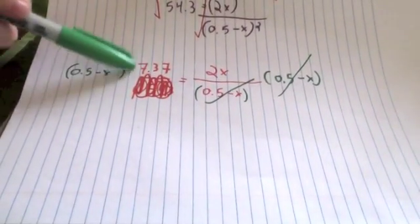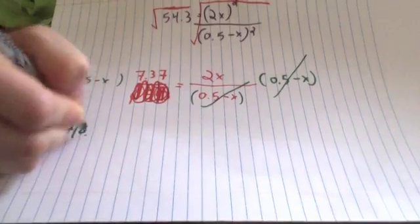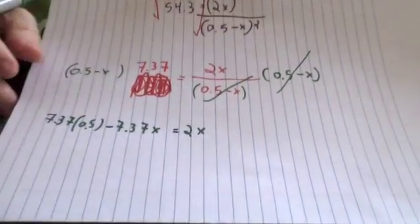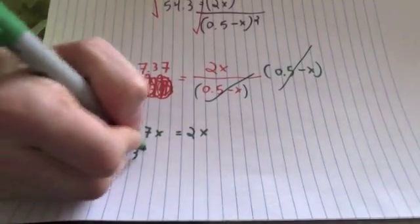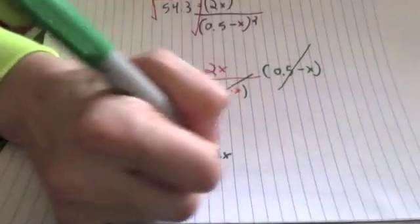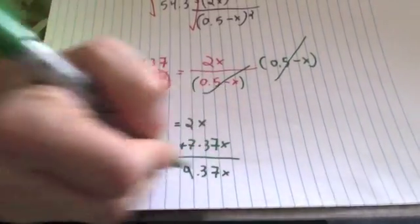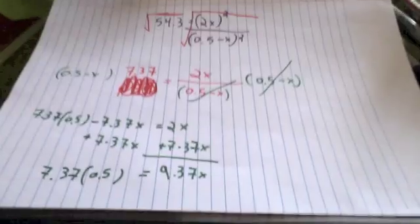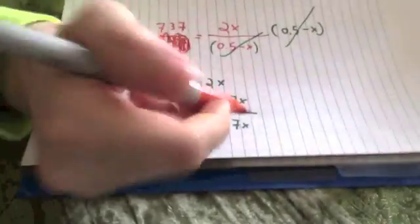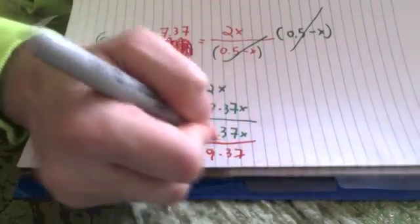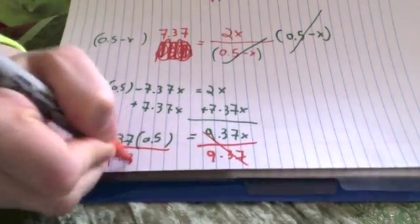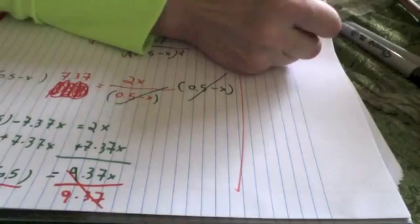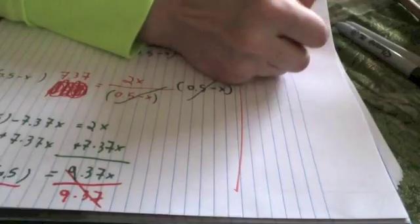So what I wind up with here is 7.37, and again I don't have a calculator, so I'm just going to write it out. 7.37 times 0.5, and that will be minus 7.37x equals 2x. Now how am I going to go ahead and solve for x? I'm going to add a 7.37x to both sides so that I can get all my x's on one side. And that's going to give me 9.37x equals whatever this 7.37 times 0.5 is. And now my last step is just in order to solve, I want to get x all by himself. So I'm going to say divide both sides by 9.37. And on my calculator, x is going to be equal to 7.37 times 0.5 divided by 9.37. That will give you x. Is that my answer?